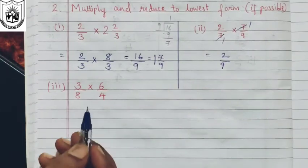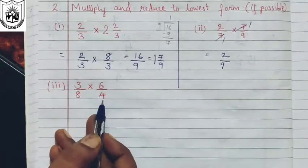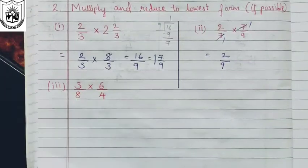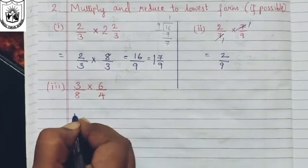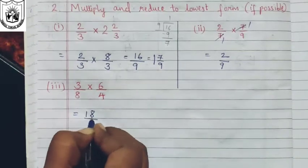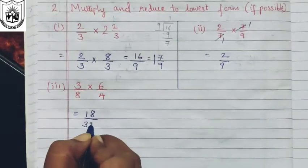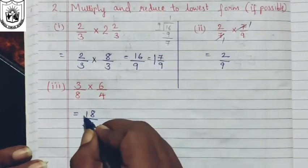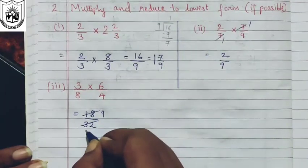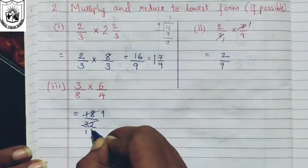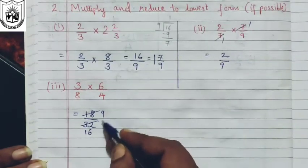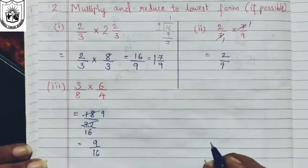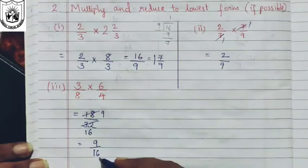Look at the third question: three-eighth multiplied by six-fourth. You can multiply to get three times six are eighteen and eight times four are thirty-two, then cancel further. Simplifying with the factor two: two nines are eighteen, and two sixteens — checking common factors — nine and sixteen have no common factor. So nine upon sixteen is your final answer, and this is a proper fraction.